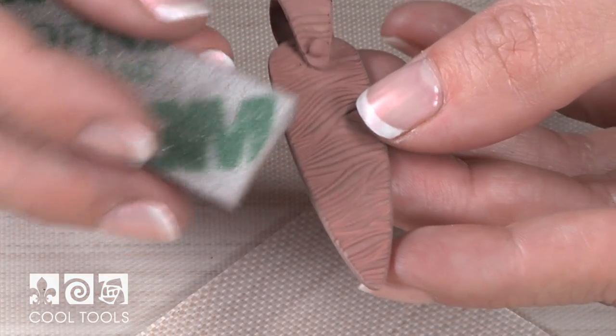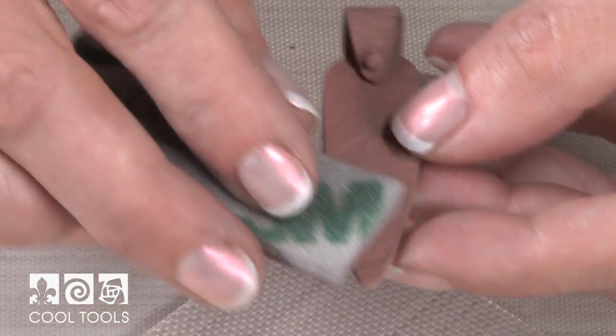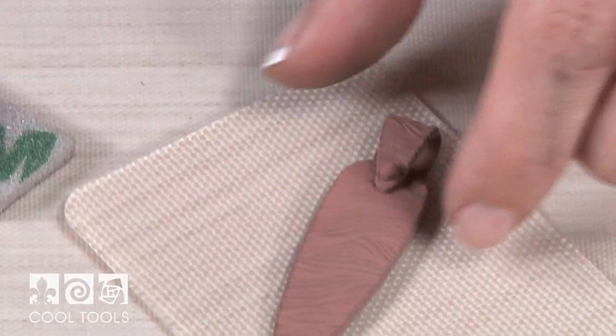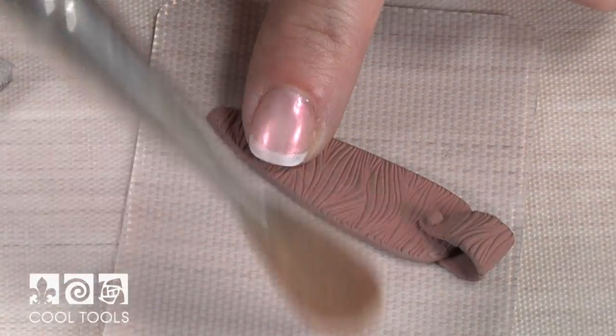After the pendant is dry, look it over one last time to make sure the bale is attached and aligned properly. Do any additional light sanding at this time. Lightly brush the piece to remove any sanding dust prior to firing.